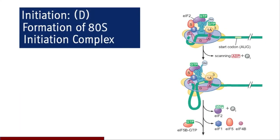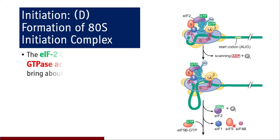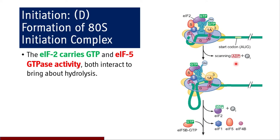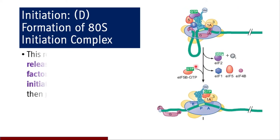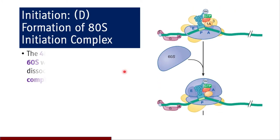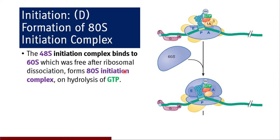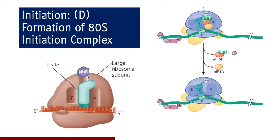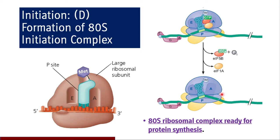Coming to the fourth step — formation of the 80S initiation complex. EIF2 carries GTP. After the 48S initiation complex is formed, EIF2 and EIF5 interact. Because EIF2 is complexed with GTP and EIF5 has GTPase activity, hydrolysis of GTP occurs. This results in release of all initiation factors bound to the 48S initiation complex, which are then recycled. The 48S initiation complex binds to the free 60S subunit to form the 80S initiation complex, which is now ready for protein synthesis.